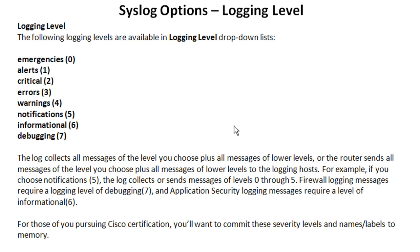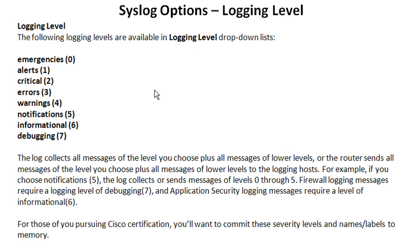Something important to keep in mind is that when you set the logging level, you're setting logging up to and including that level. So if we wanted notifications, and I set this to 5, what I'm actually going to get is everything up to that level: 0, 1, 2, 3, 4, 5 — emergencies through notifications. It's inclusive with the levels below it. So if you get a question that says log all possible syslog messages, you know they're asking you to set the logging level to debugging because that includes 7 through 0, all 8 levels.